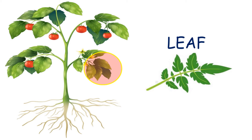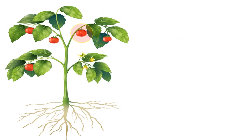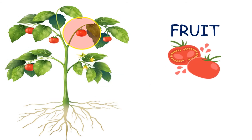Leaves collect sunlight and make food for the plants. They take in carbon dioxide and release oxygen into the air. Leaves come in many different shapes and sizes, but most are flat and green.